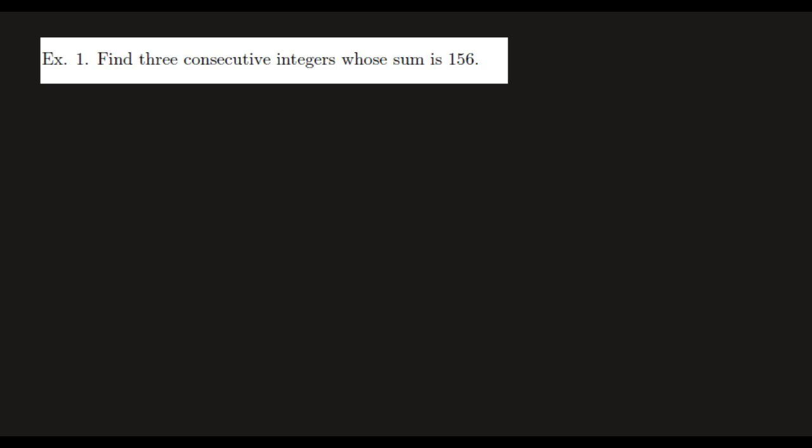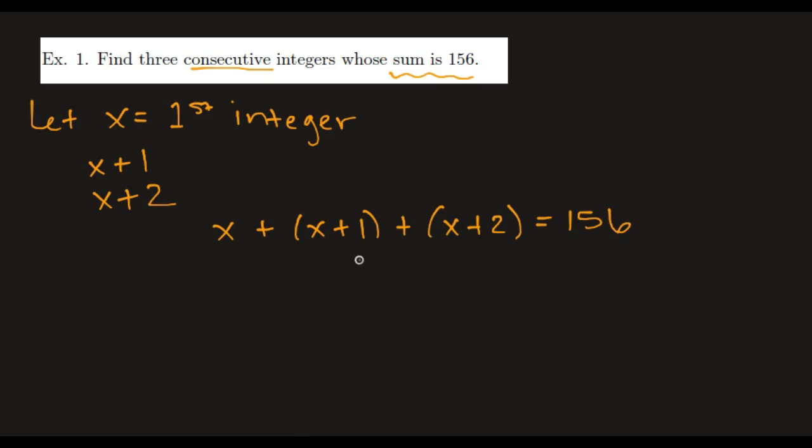For example 1, we need to find three consecutive integers whose sum is 156. So we need to define a variable. I'm going to let x equal the first integer. If x is the first one, they are consecutive. So then the other ones are x plus 1 and x plus 2. So we have defined the variable. We have expressed the unknowns in terms of the variable. Now we're going to set up the model. What information are we given? We're given that the sum is 156. So I know that x plus x plus 1 plus x plus 2 is equal to 156.